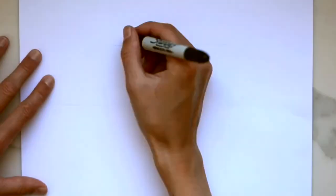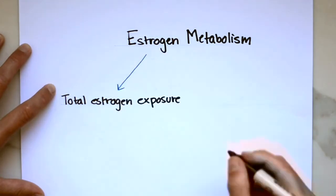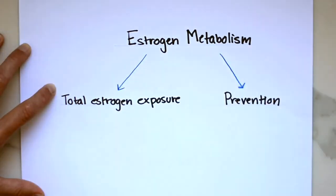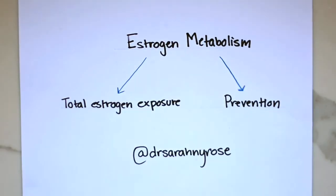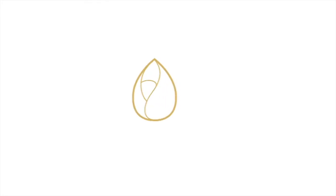Looking at estrogen metabolism provides us with more information about total estrogen exposure and it really helps us to focus on prevention. It allows us to take a look at those metabolites and to evaluate whether or not you're breaking down that estrogen optimally and if there's anything we need to do to create more of a balance. So stay tuned for more information about estrogen metabolism and in particular phase 3 of estrogen metabolism which happens in the gut. Thank you for listening. Take care.